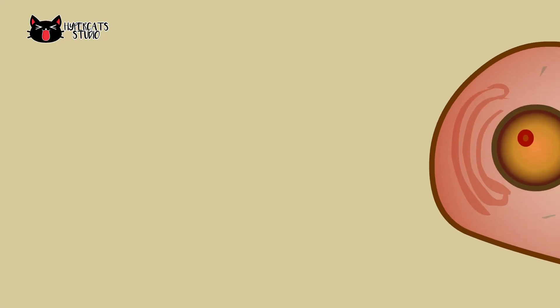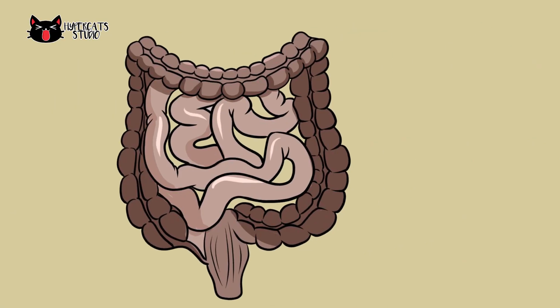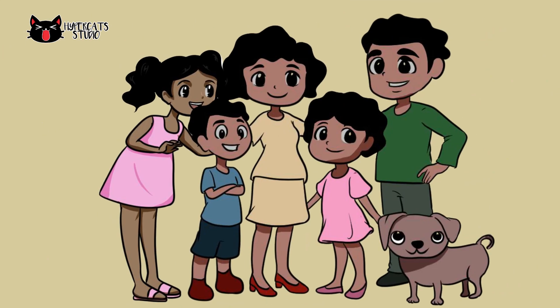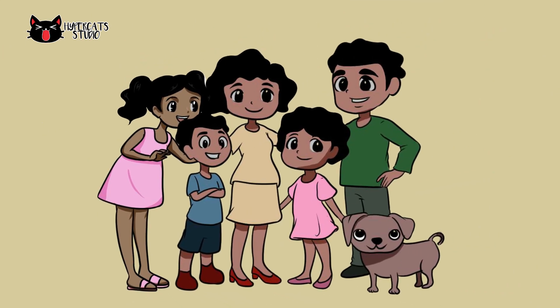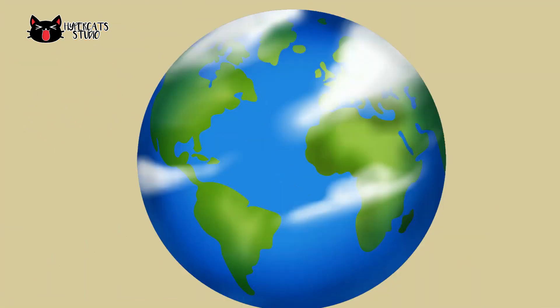Organisms are organized from cells, tissues, organs, organ systems, organisms, population, community, ecosystem, and biosphere.